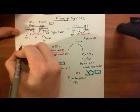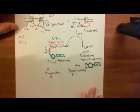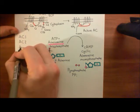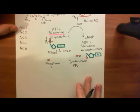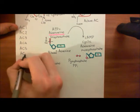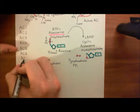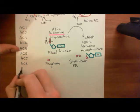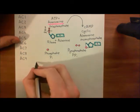The nine adenylyl cyclase enzymes are named very sensibly: adenylyl cyclase 1, 2, 3, 4, 5, 6, 7, 8, and 9 — though some people use Roman numerals. We now want to discuss the way these are categorized into four groups. Adenylyl cyclases are grouped into group 1, group 2, group 3, and group 4, each with their own colloquial names.